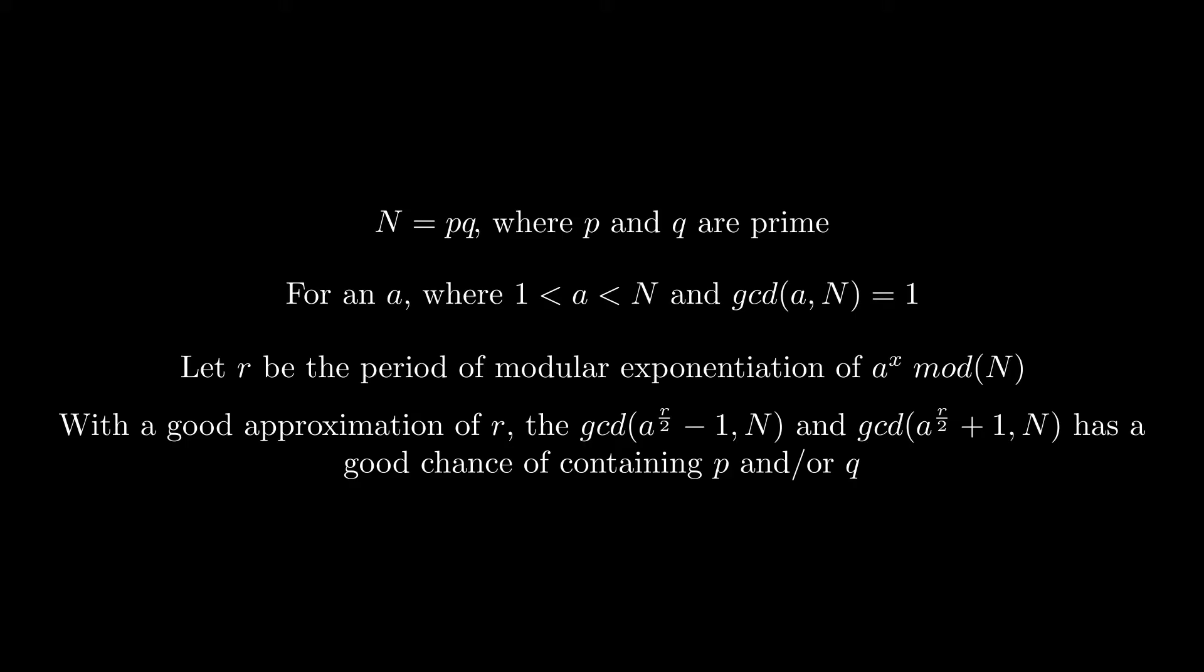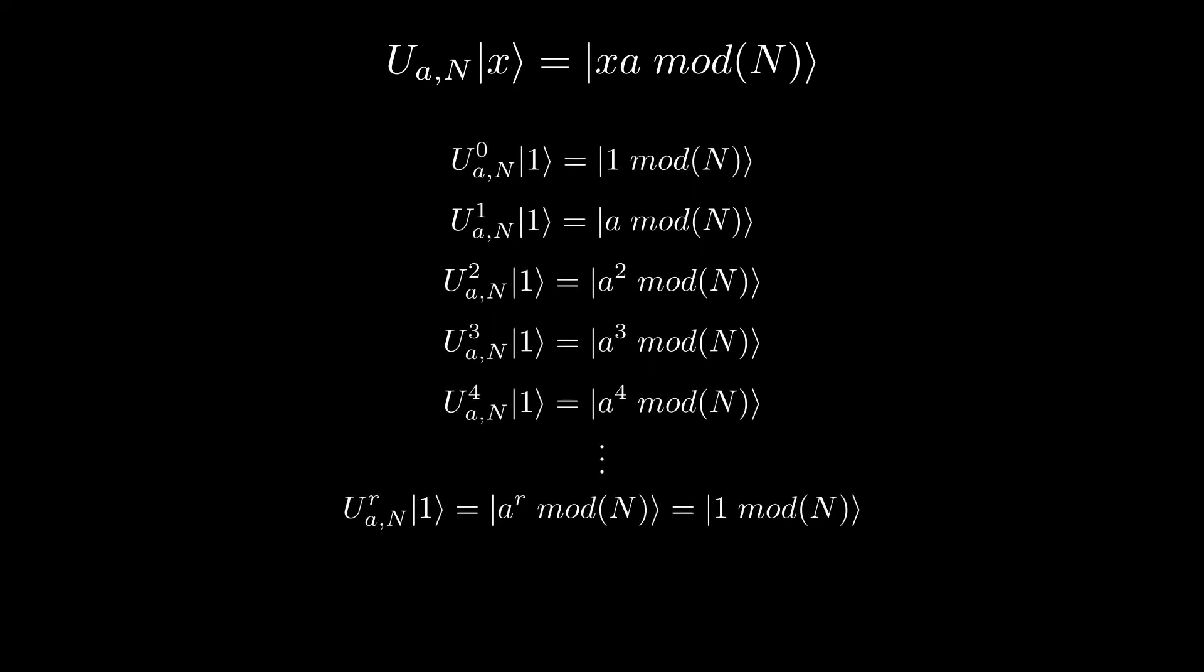Let's go through the steps in finding the period of modular exponentiation. For this, we need to use this gate, let's call it U, which transforms the state x to the state x a mod N. If we apply this gate to the one state multiple times, we can get powers of a in mod N. How we construct this gate is outside the scope of this course.